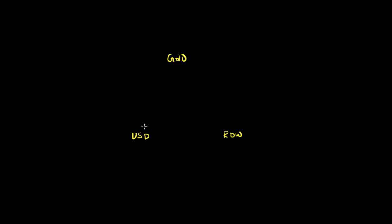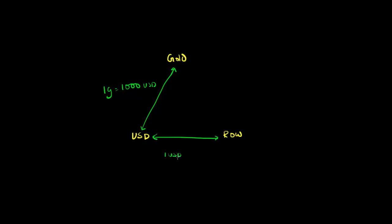We're going to assume that the exchange rate between U.S. dollars and gold is such that you can exchange one unit of gold for 1,000 U.S. dollars. Typically in the gold market, one unit of gold is equal to one ounce of gold. So we're going to assume that one ounce of gold is equal to 1,000 U.S. dollars. We're also going to assume that the exchange rate between U.S. dollars and rest of the world currencies is such that one U.S. dollar is equal to two rest of the world currency — meaning one U.S. dollar is worth twice as much as the average rest of the world currency.